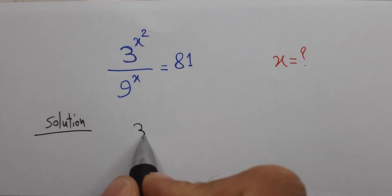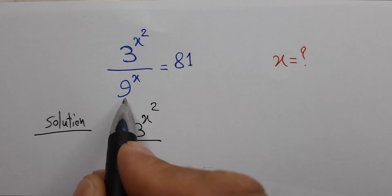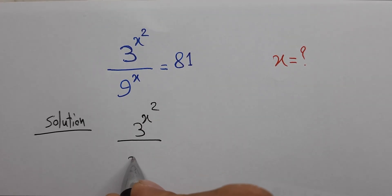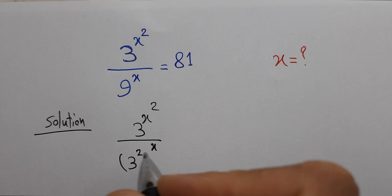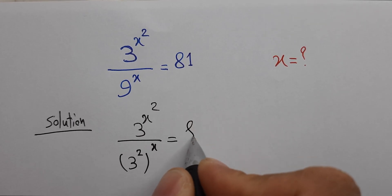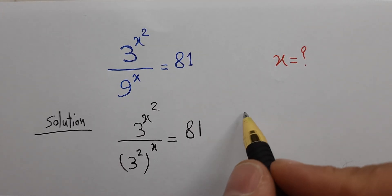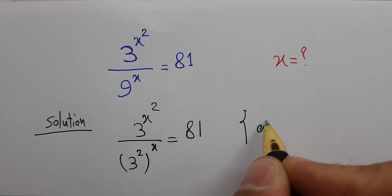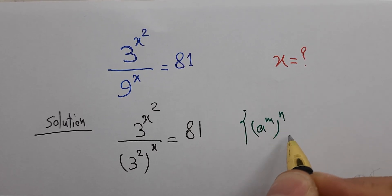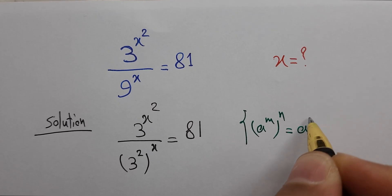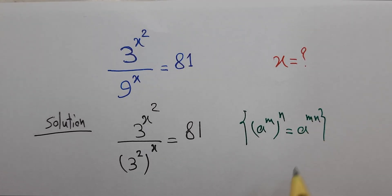3 to the power x squared, over — we can write 9 as 3 power 2, whole power x, equals 81. As you know, a power m, whole power n, equals a power m times n.